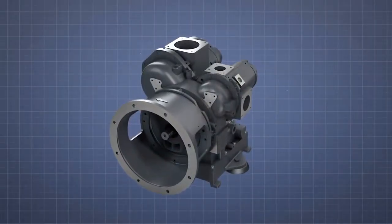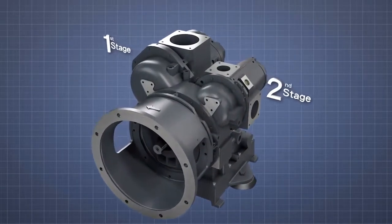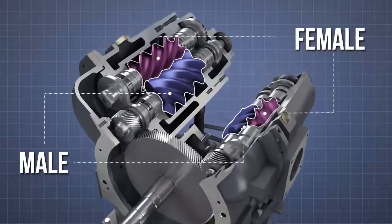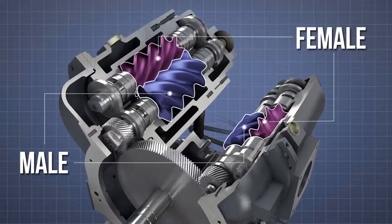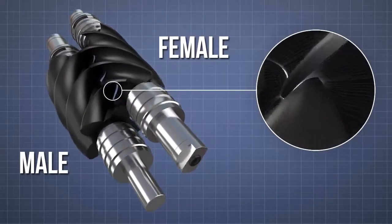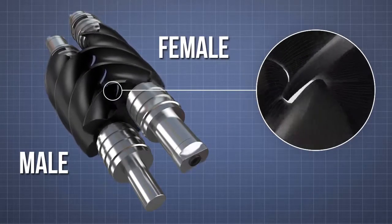The Gardner Denver air-end is a two-stage oil-free compressor unit. Both compression stages comprise male and female rotors with a special protective coating. There's no physical contact, either between the matched rotor pairs or the rotors and the air-end casing.